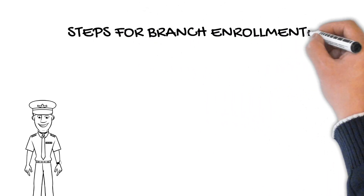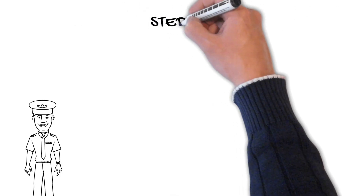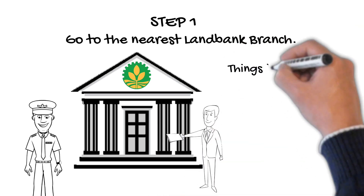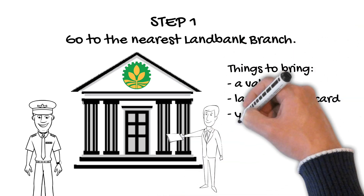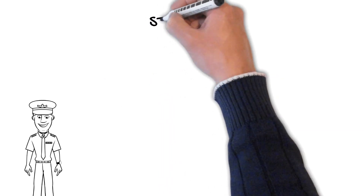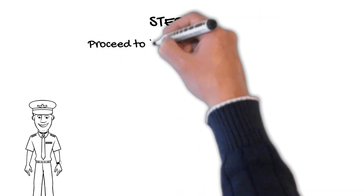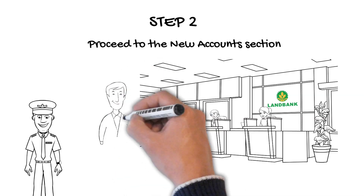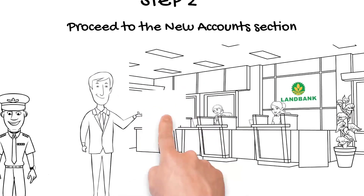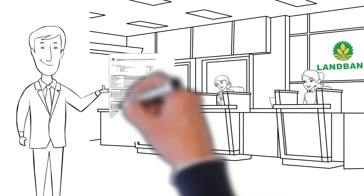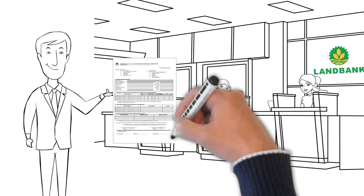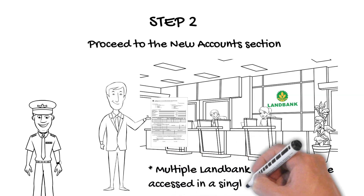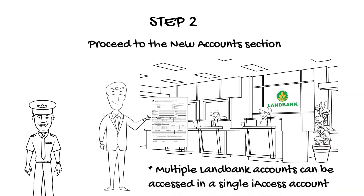This is the branch enrollment process. Step 1: Go to the nearest LandBank branch and bring a valid ID, LandBank ATM card, and your account number. Step 2: Proceed to the new accounts section and tell the officer that you want to apply for the LandBank iAccess. He or she will give you a LandBank iAccess enrollment and maintenance agreement, or LIEMA form. If you have multiple accounts in LandBank, you can access them through a single iAccess account.